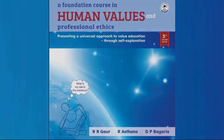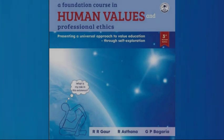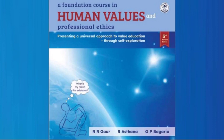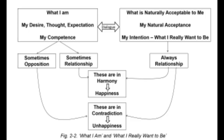What I am is my current competence on the basis of which I live. It includes the way I feel, the way I think, how I make decisions, what I expect from others, and all of that. It has to do with my desires, thoughts, expectations, etc. What is naturally acceptable to me is my natural acceptance — it is my intention, it is what I really want to be, it is a basic reference which is a part and parcel of me.